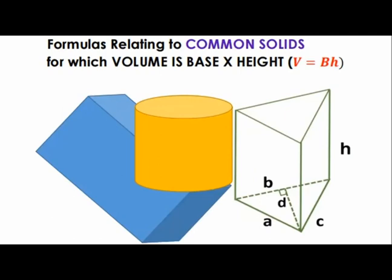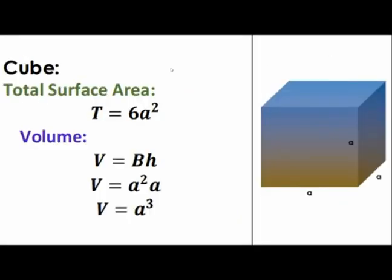Base pertains to the area of the base. Consider a cube. Each square face has an area of A squared. Having six square faces, the total surface area, denoted by T, is therefore equal to 6A squared.